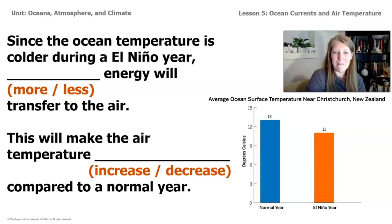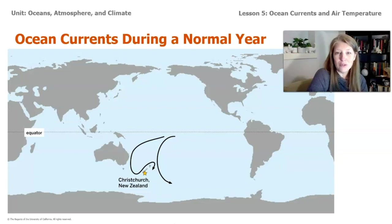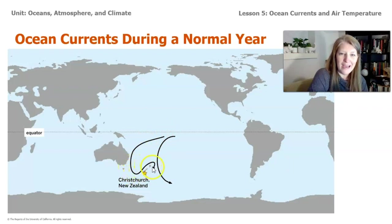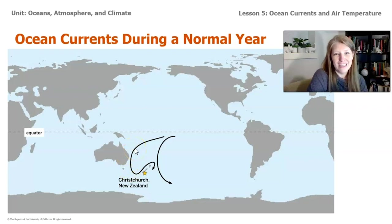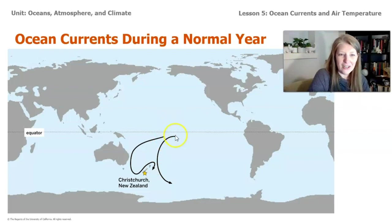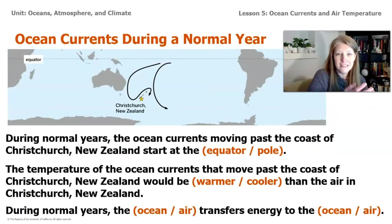Now here's a map showing what the ocean currents look like near New Zealand during a normal year. You can see two major currents off the coast that travel past Christchurch. One starts at the equator, moves down past the east coast of Australia, wraps around, and passes down around New Zealand — that's the East Australian Current, or EAC. If you've seen Finding Nemo, you might know turtles ride that current. The second current also starts at the equator, where the water temperature is very warm.